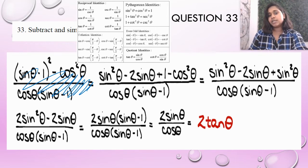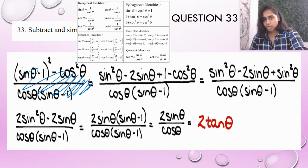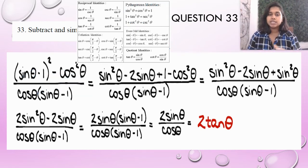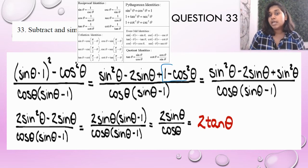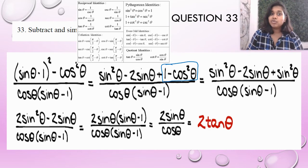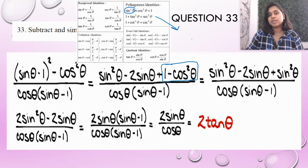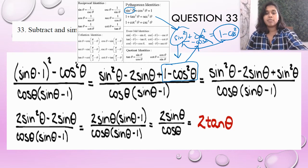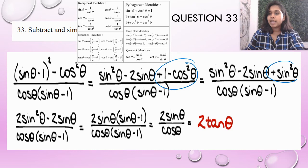If you notice sine squared theta minus 2 sine theta plus one minus cosine squared, we got a lot of squares. Pythagorean identity alert. You might notice that one minus cosine squared is already there, and you can just convert that to sine squared. As a reminder: one minus cosine squared equals sine squared, so I can bring it in as substitution.